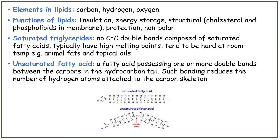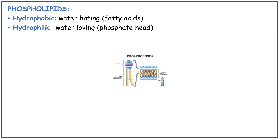Saturated triglycerides have no carbon-to-carbon double bonds and are composed of saturated fatty acids. They typically have high melting points and tend to be hard at room temperature, for example animal fats and tropical oils. Unsaturated fatty acids have one or more double bonds between the carbons in the hydrocarbon tail; such bonding reduces the number of hydrogen atoms attached to the carbon skeleton. Hydrophobic means water-hating — the fatty acids face away from water. Hydrophilic means water-loving — the phosphate head faces towards water.